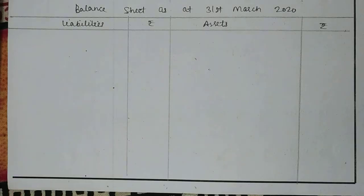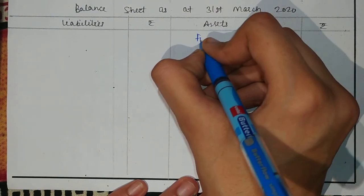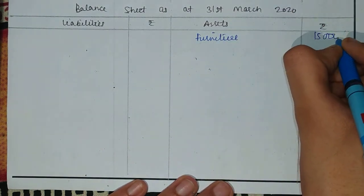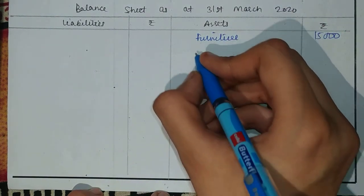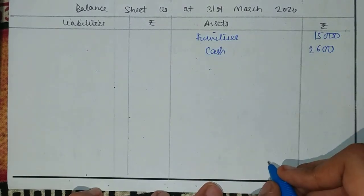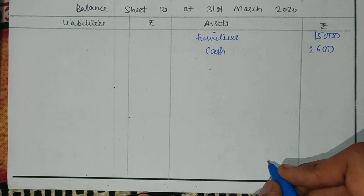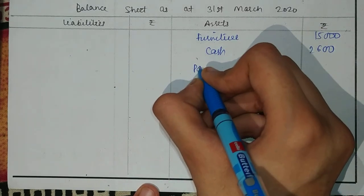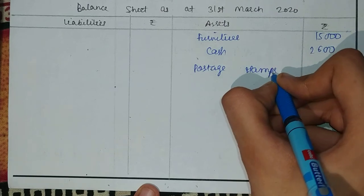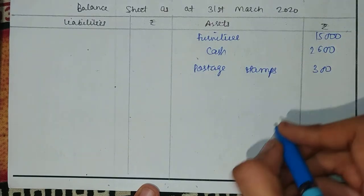Now we have to prepare the opening balance sheet. First of all, what is given? We have furniture — the opening balance is given as an asset — so you include $15,000. After that, in the balance sheet, the cash amount can be taken from the receipt and payment account. From additional information, the opening balance of postage stock is given, so you include postage stamps — opening balance $300.